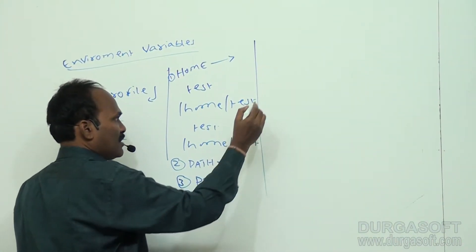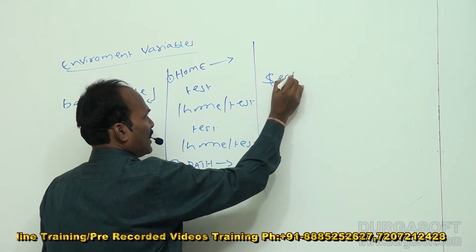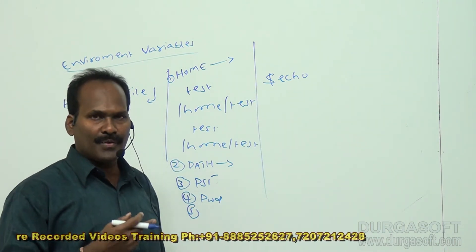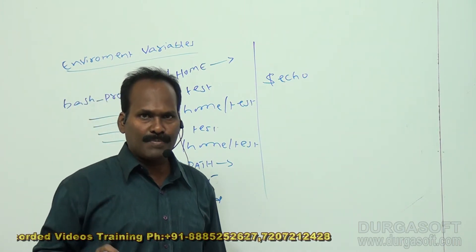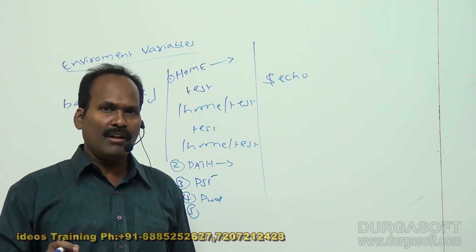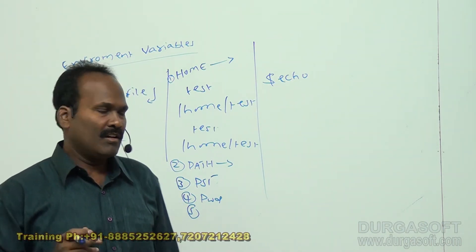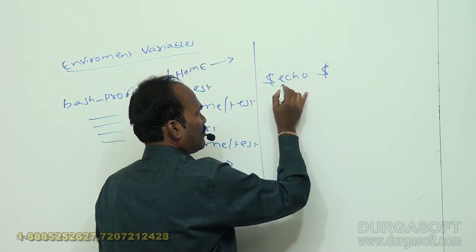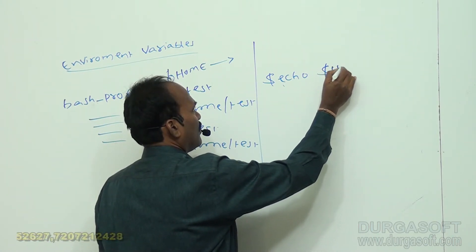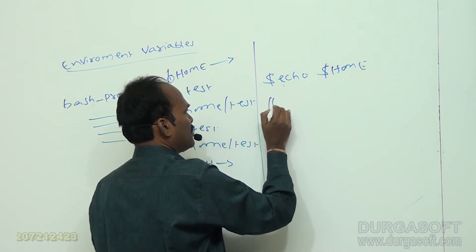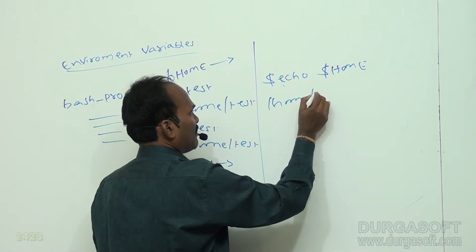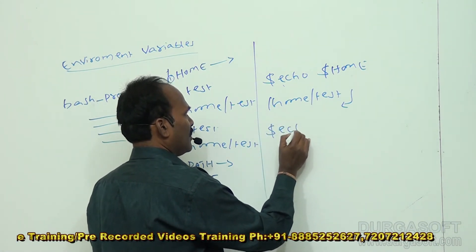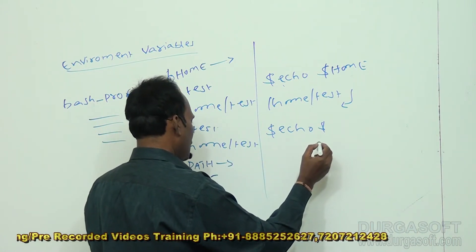We can have other predefined environment variables, but how do we display and use these variables? In order to use these variables, from the dollar prompt you execute the echo command. The echo command displays the value of a predefined variable. The variable must be prefixed with a dollar sign — for example, echo $HOME is going to display the home directory.